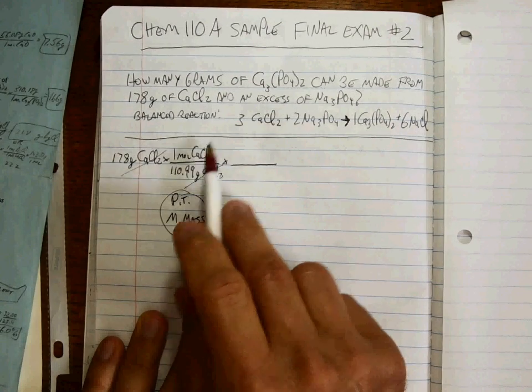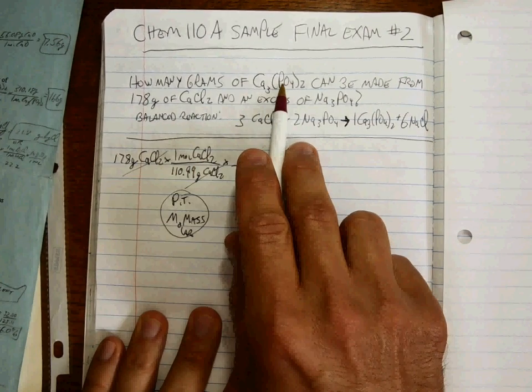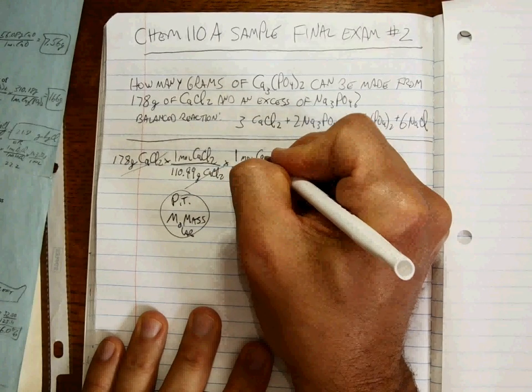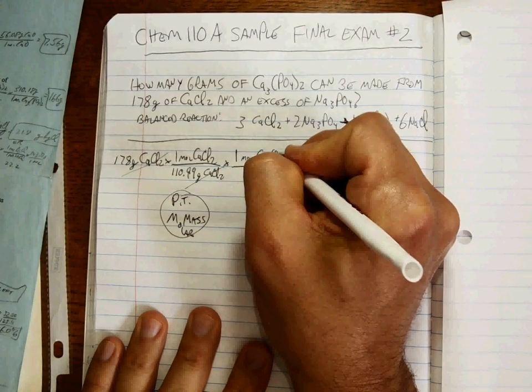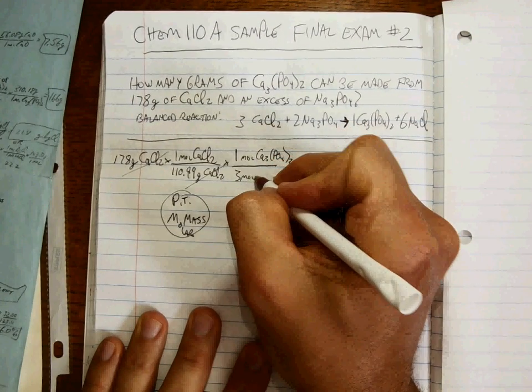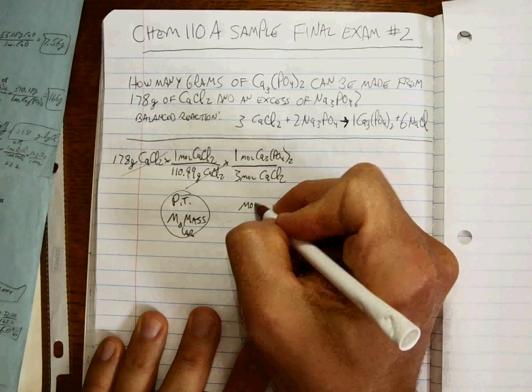Now that we're at moles of calcium chloride, we can do the mole to mole ratio between what we started with and what we want to end up with. That mole ratio is one, two, three. Mole to mole ratio.